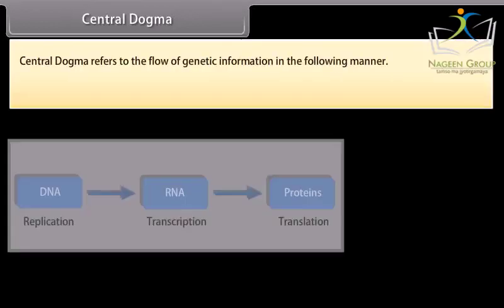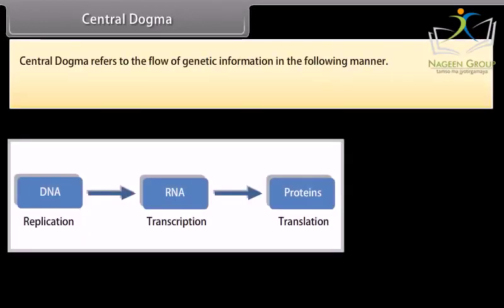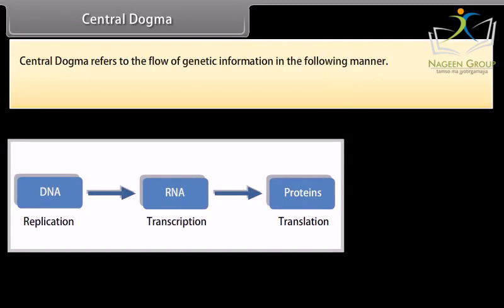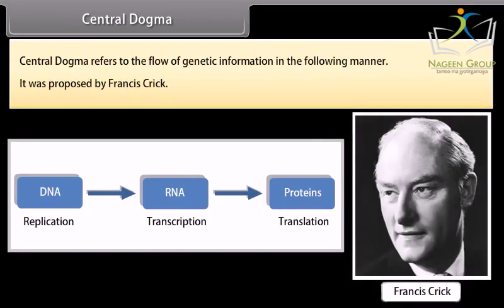Central dogma refers to the flow of genetic information in the following manner. It was proposed by Francis Crick.